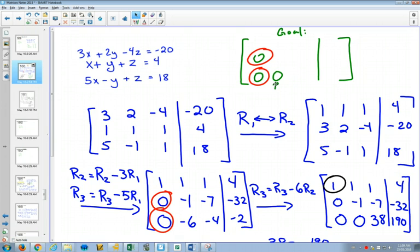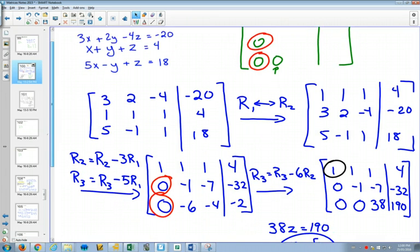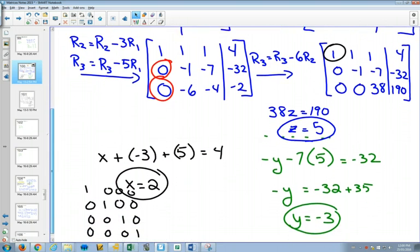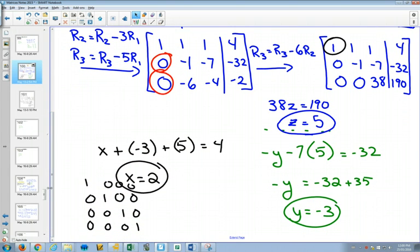Once I've got those two 0s initially, now to get this to be a 0, I can take row 3, and if I subtract six row 2s, that'll make a 0 in that bottom corner. Which then ends with those two 0s. That means that 38 z's is equal to 190. So you can figure out that z is equal to 5.